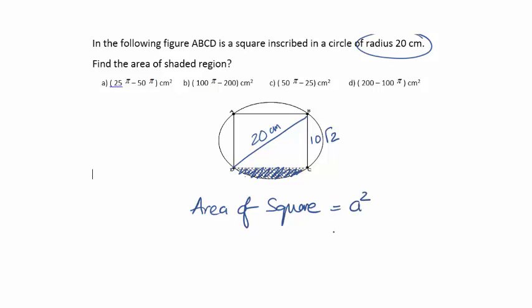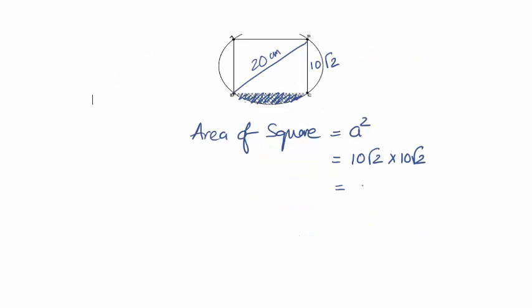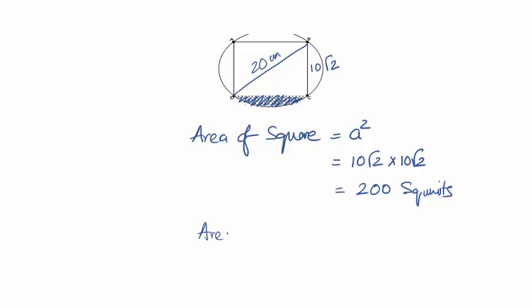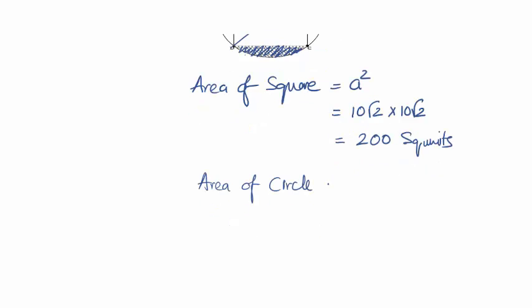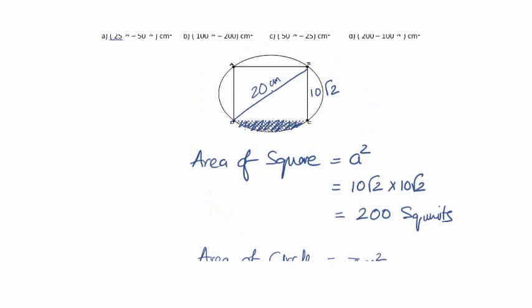Area of the square, that is a squared, 10 root 2 times 10 root 2, which makes 200 square units. And the area of circle is pi r squared. We all know that the r value in this is 20 by 2, that is 10.